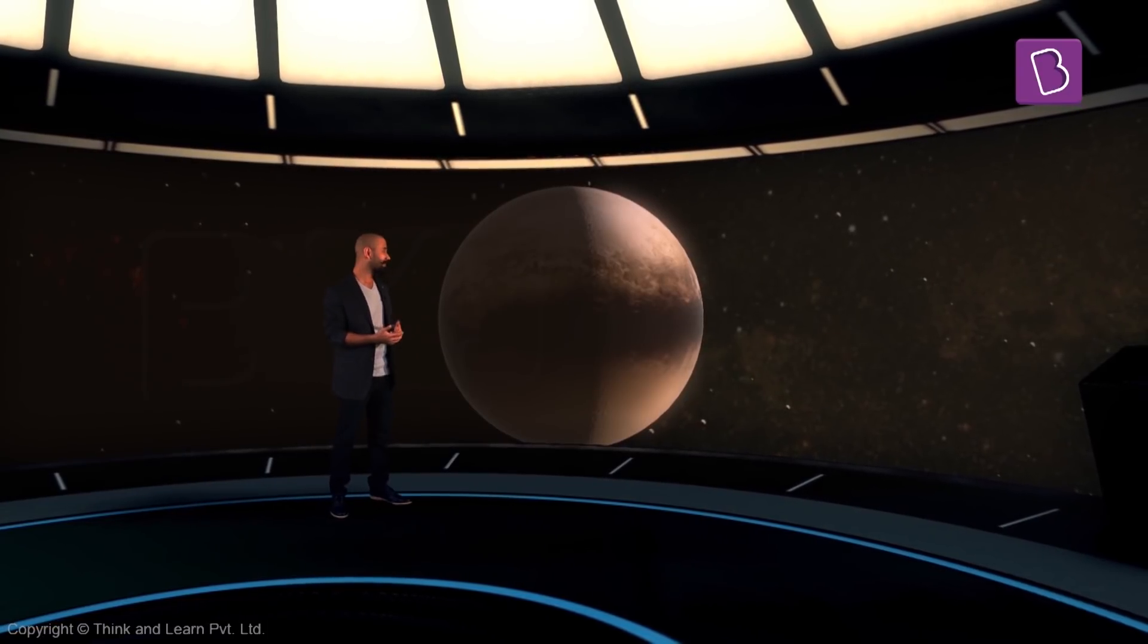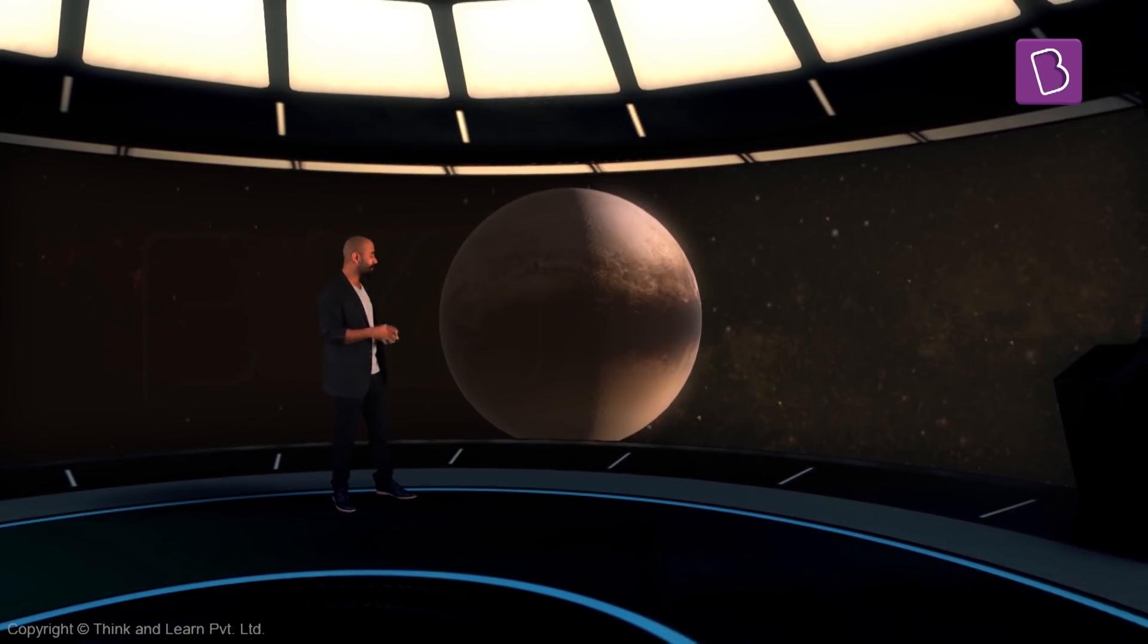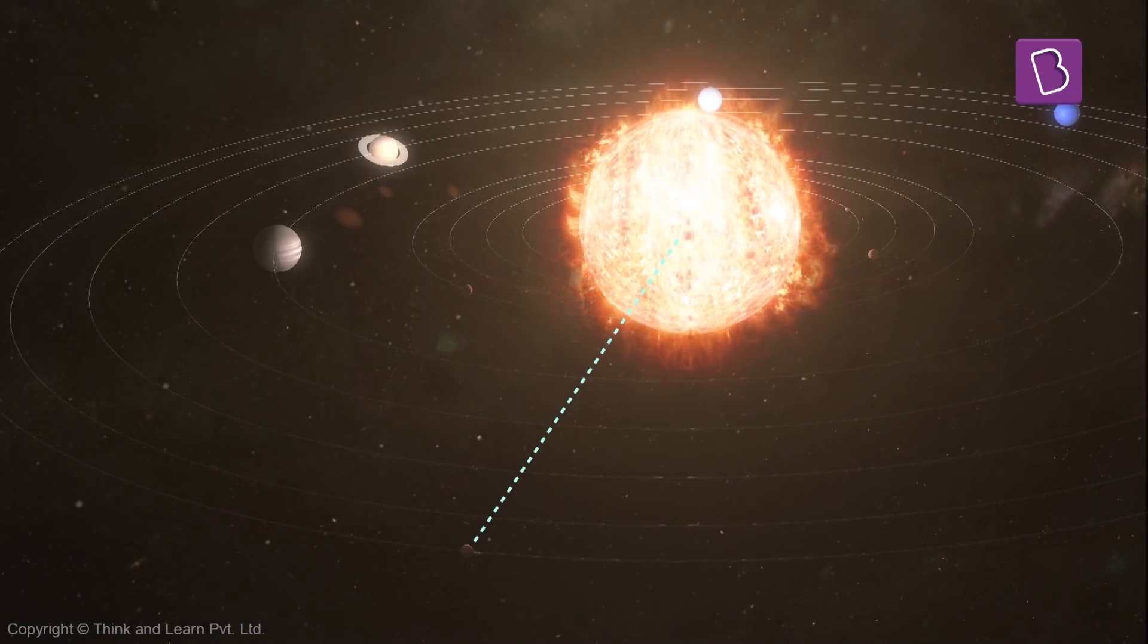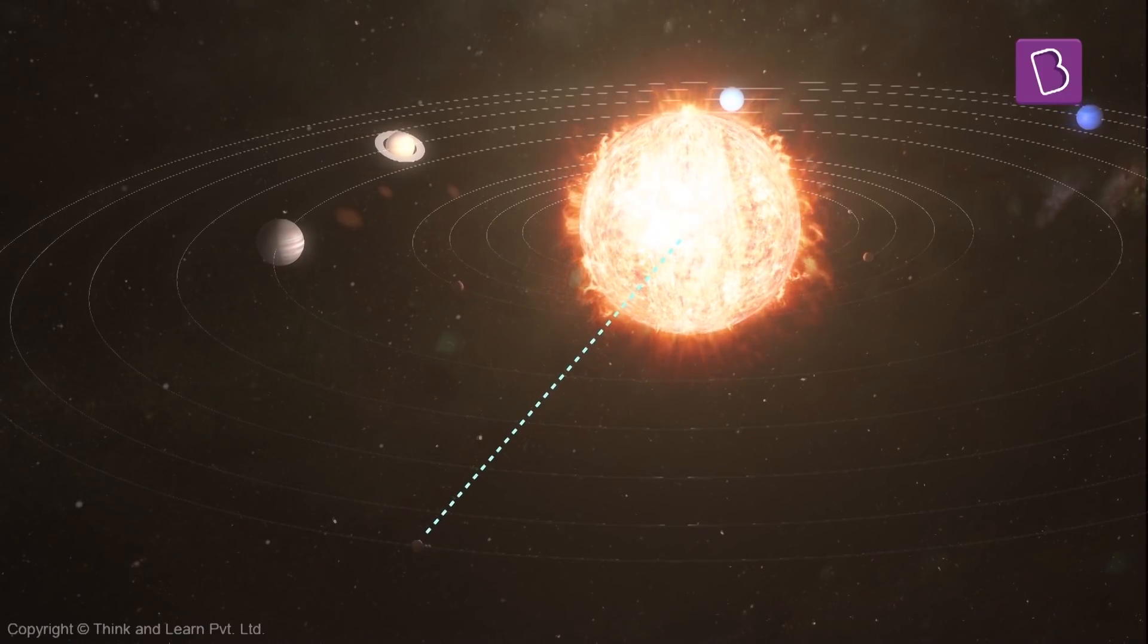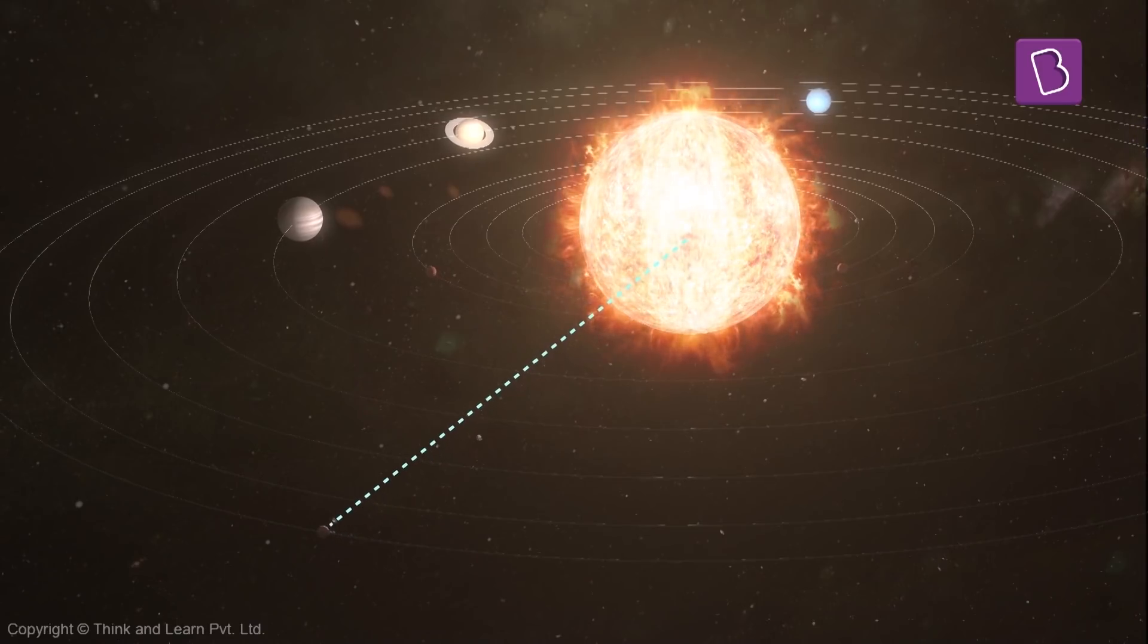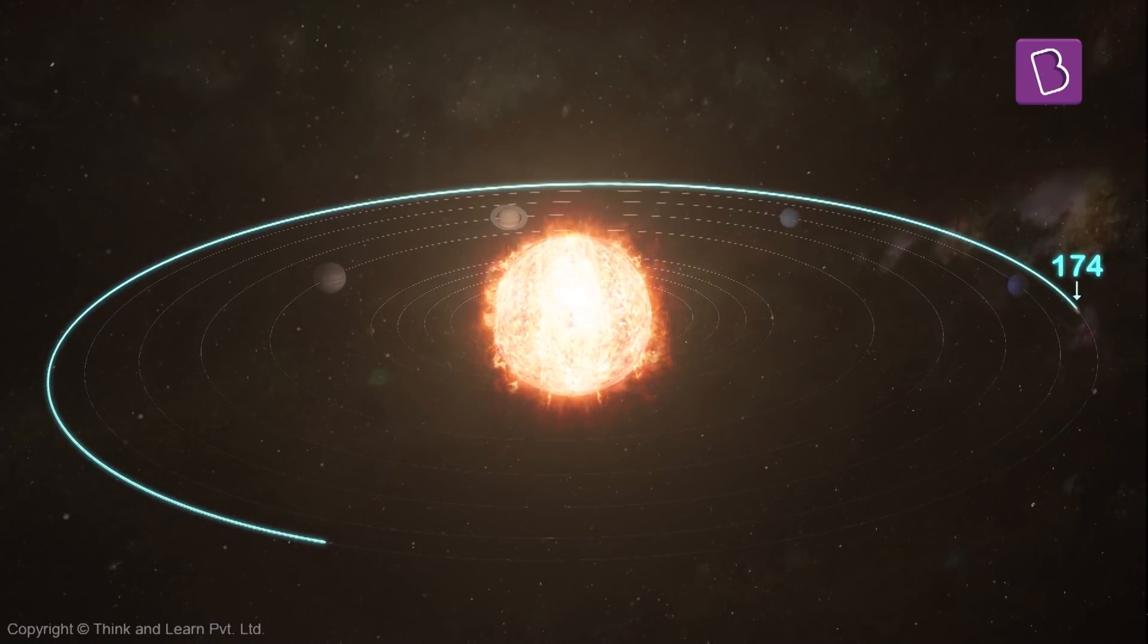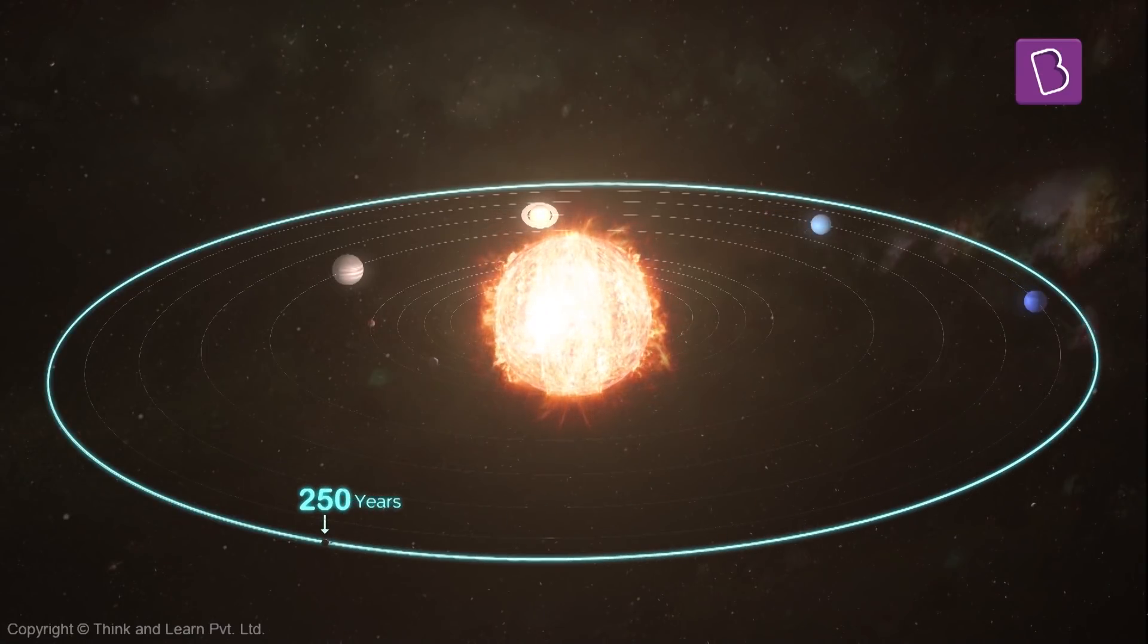Pluto is extremely cold. Its average surface temperature is around minus 220 degrees Celsius because it's extremely far away from the Sun and doesn't receive much of the Sun's heat. Because it's so far away, it takes about 250 years to go around the Sun.